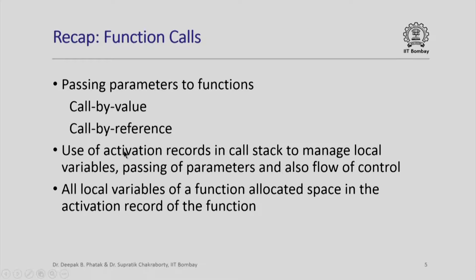We are going to talk about function calls, so let us quickly recap what we know. We can pass parameters to functions in one of two ways: call by value and call by reference. We know that activation records are pushed and popped from the call stack, which is stored in the stack segment, and these activation records are the mechanism by which we manage local variables, passing of parameters, and flow of control when a function calls and returns. All local variables of all functions in a program are allocated space in the activation record of the function, and the call stack resides in the stack segment.